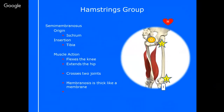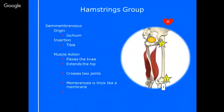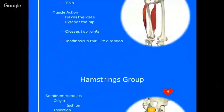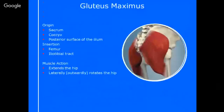Semi-tendinosus — other than being thin like a tendon compared to the membrane, it attaches in exactly the same places. Membranosus is thick and wide; tendinosus is thinner and more stringy, like a tendon. But the origin and insertion are identical: origin at the ischium, insertion at the tibia. Group those two together — if it's semi-membranosus or semi-tendinosus, it's ischium to tibia, crossing two joints.